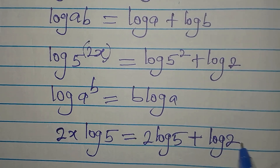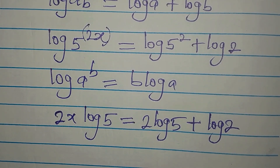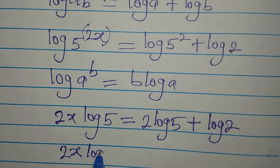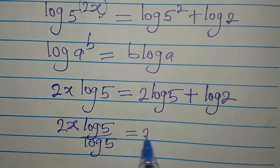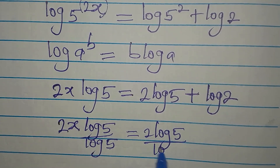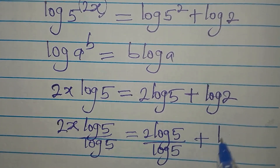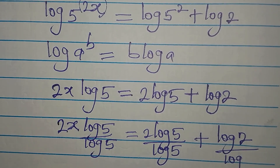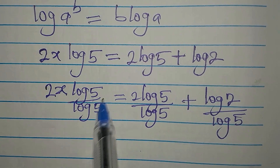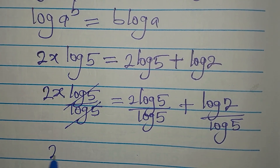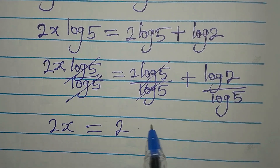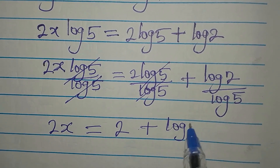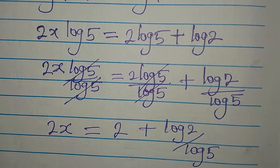Now we want to get the value of x, so let's divide both sides by log 5. We have 2x log 5 divided by log 5 on the left, and on the right we have 2 log 5 divided by log 5 plus log 2 divided by log 5. The log 5 cancels on the left and the first term on the right, giving us 2x equals 2 plus log 2 divided by log 5.